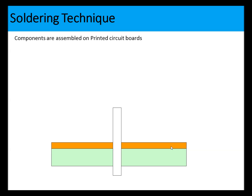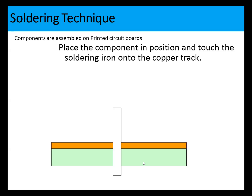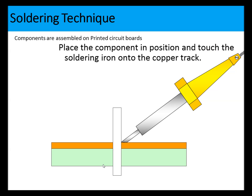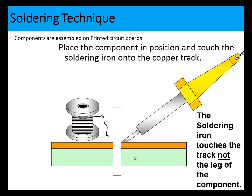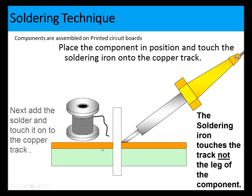Components are assembled onto printed circuit boards by soldering. In a sectional view, you can see the PCB, the leg of a component, and the copper strip. The soldering iron touches the copper track - not the leg of the component. Once the track is heated, solder is added to the copper track and flows up onto the component leg, holding it in place and making a good electrical connection.